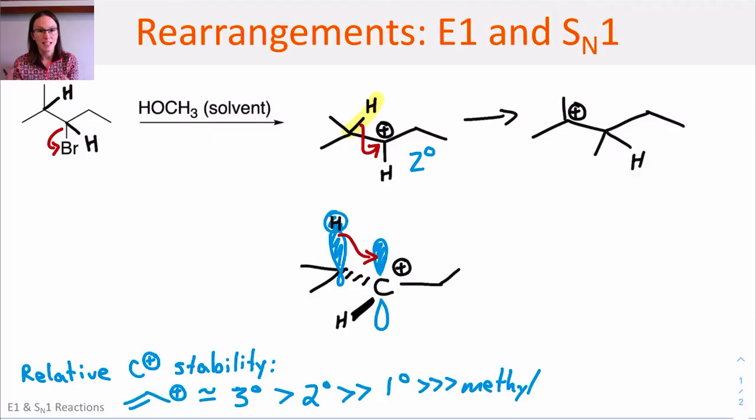Now there's a deficit of electrons on the left-hand carbon, which is a tertiary carbon, so that process has resulted in a stabilization of the carbocation.